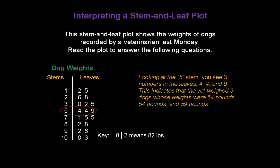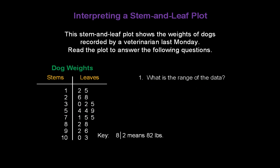Looking at the 5 stem, you see three numbers in the leaves: 4, 4, and 9. This indicates that the vet weighed three dogs whose weights were 54 pounds, 54 pounds, and 59 pounds. Now we have enough information about the table to start answering questions.